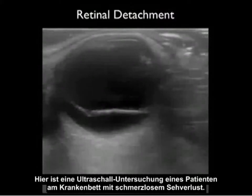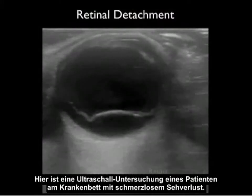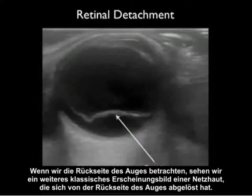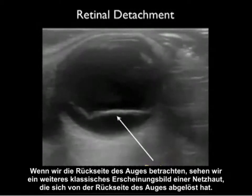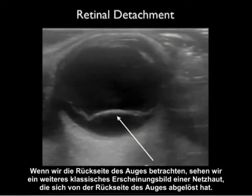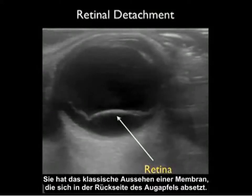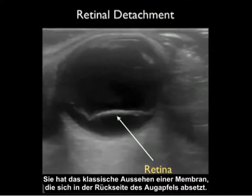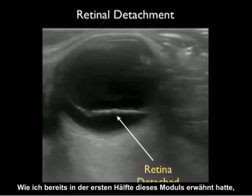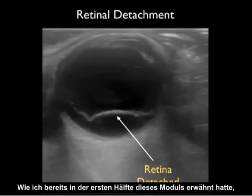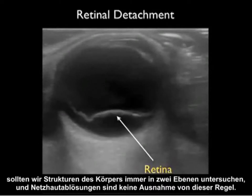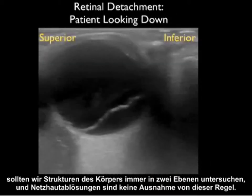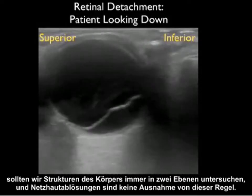Here's a bedside ultrasound examination from another patient who had painless loss of vision. Looking into the back of the eye, we see another classic appearance of a retina detached off the back of the eye — a classic membrane-type appearance that layers out in the back of the eyeball. As mentioned earlier in this module, we should always investigate body structures in two planes, and retinal detachments are no exception to that rule.